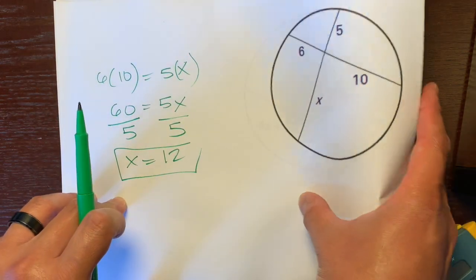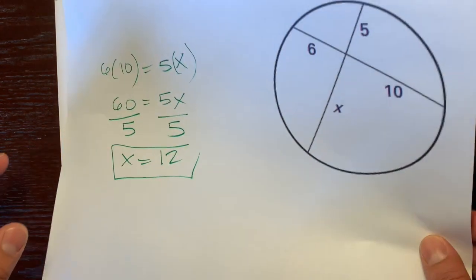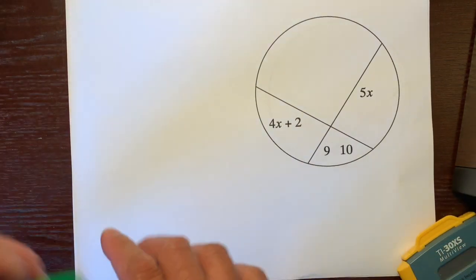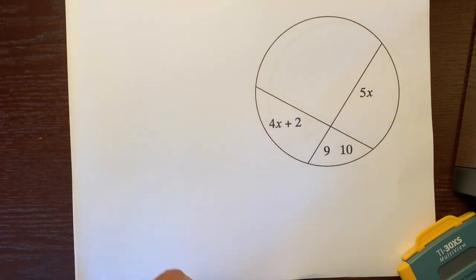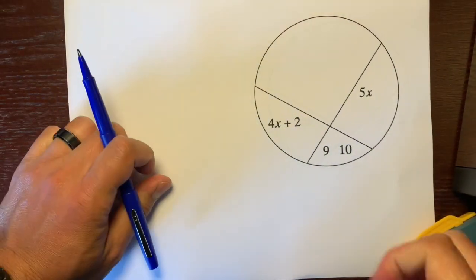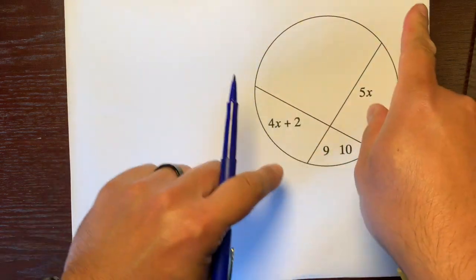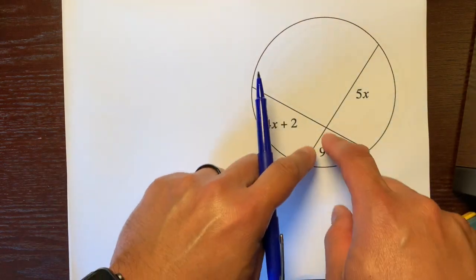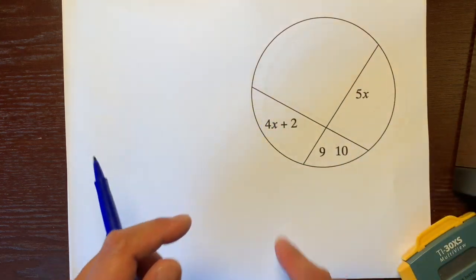Second example might get a little more challenging. This one with two x's, two variables. I'll even use another color just because it's a little more challenging, this blue. Remember, it's two chords that intersect. It's the piece of one chord times the other piece is equal to a piece of one chord times the other piece.